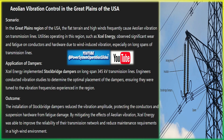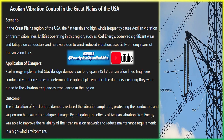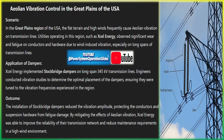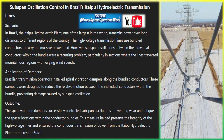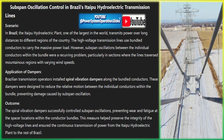Galloping, which can cause severe mechanical stress and result in line clashing or short circuits, is controlled using specially designed dampers such as pendulum dampers or interphase spacers. This is crucial for preventing power outages in regions prone to ice storms or heavy winds. Reduced vibration also means less mechanical loss in the system; by preventing unwanted movement in conductors, dampers help maintain the efficiency of the transmission line and reduce energy losses due to conductor motion.